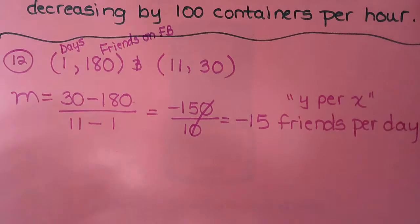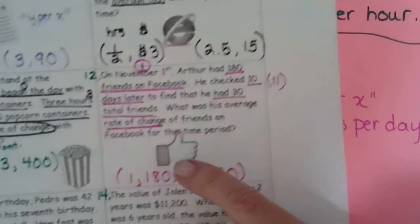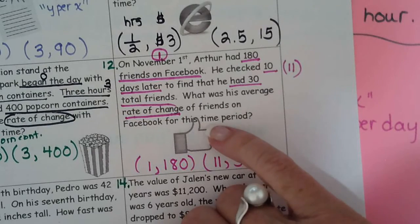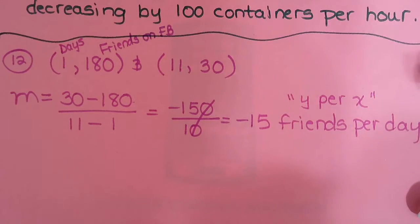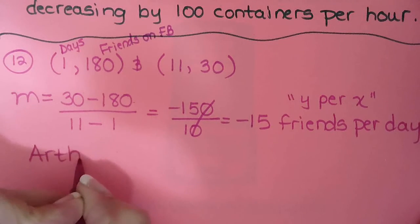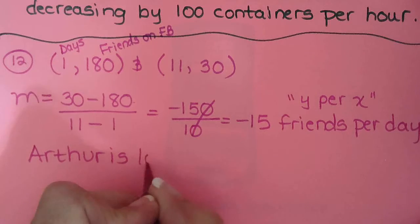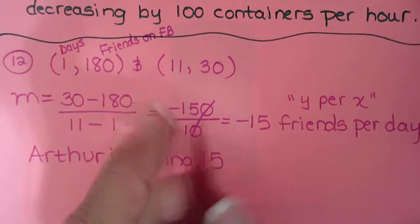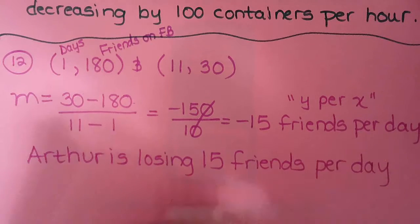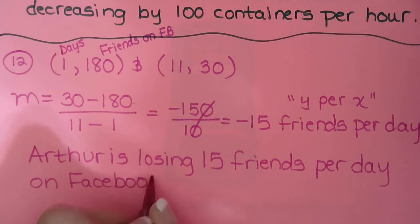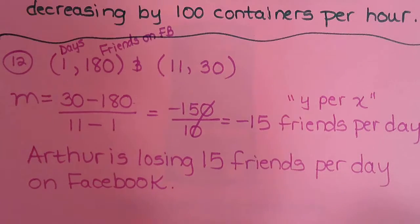And then we usually go back to the problem to decide how to word it. What is this average rate of change of friends on Facebook? So we need to say some words that mean negative. How about lost, losing, number of friends is decreasing. So this person is called Arthur. So Arthur is losing, don't use the negative 15, just use 15. Arthur is losing 15 friends per day on Facebook. He must have done something really bad, huh?